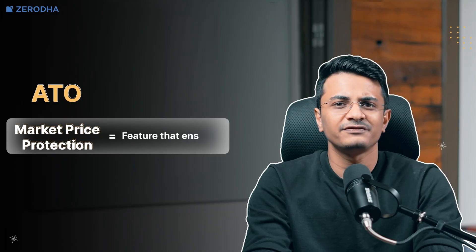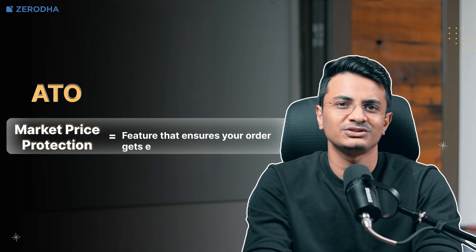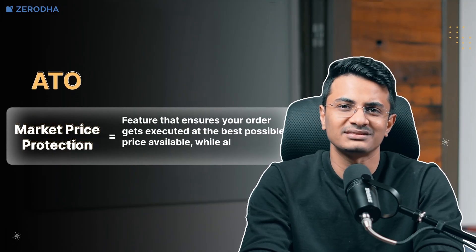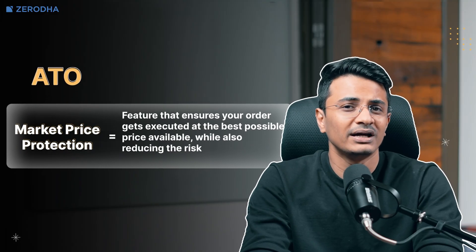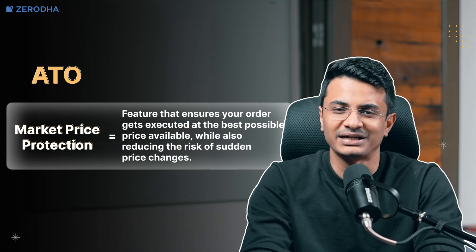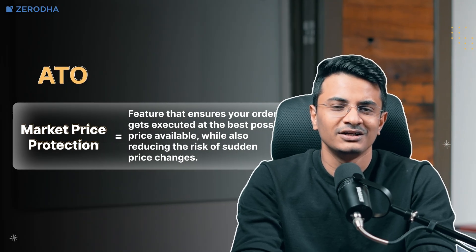If you are placing market orders in ATO, these will be placed with market price protection. It's a feature that ensures your order gets executed at the best possible price available while also reducing the risk of sudden price changes.